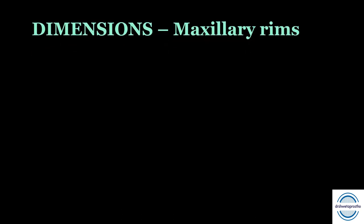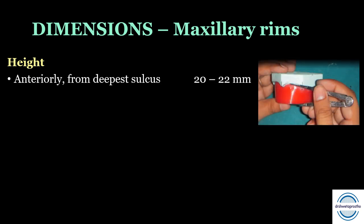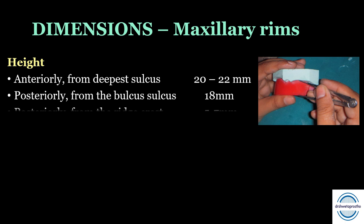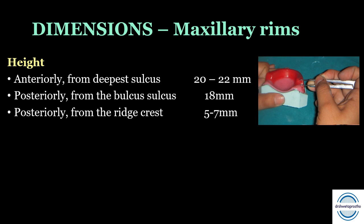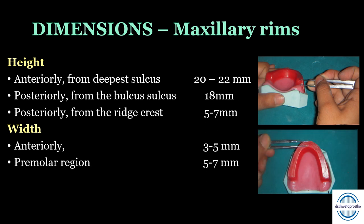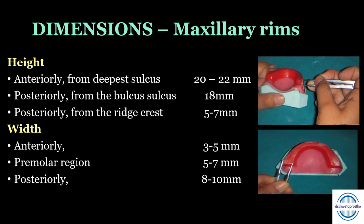The dimensions of the maxillary occlusal rims are very important. For height: anteriorly from the deepest sulcus it should be 20 to 22 millimeters; posteriorly from the buccal sulcus it should be 18 millimeters; posteriorly from the ridge crest it should be 5 to 7 millimeters — this also appears in MCQs. For width: anteriorly 3 to 5 millimeters; in the premolar region 5 to 7 millimeters; posteriorly 8 to 10 millimeters — the width increases as we go posteriorly.